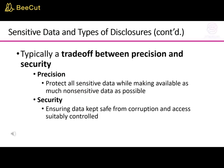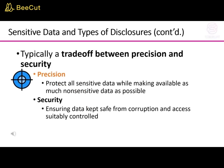There is typically a trade-off between precision and security. Precision means protecting all sensitive data while making available as much non-sensitive data as possible. Security means ensuring data is kept safe from corruption and that access is suitably controlled.